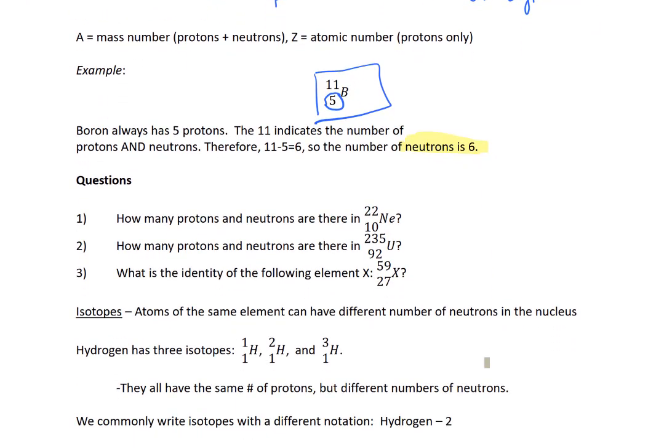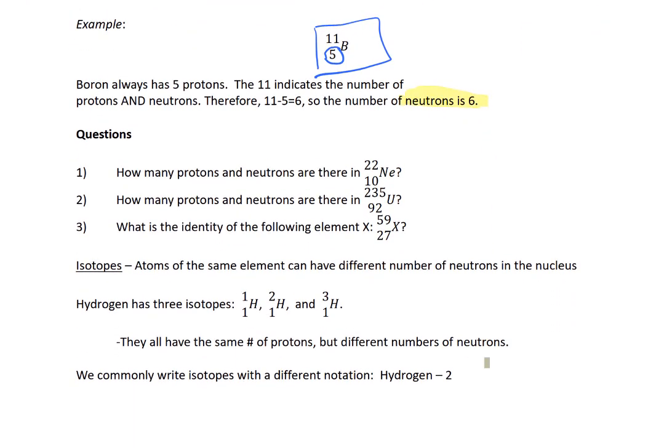So let's do some questions. How many protons and neutrons are there in neon-22? So we already know that the number of protons is 10 because that's listed down here. In order to figure out the number of neutrons, we have to do a little bit of subtraction. We have to take 22 minus 10 to get 12.